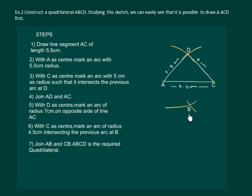Now join AB and CB. Then we have CB equal to 4.5 centimeters and DB equal to 7 centimeters. Hence ABCD is the required quadrilateral.